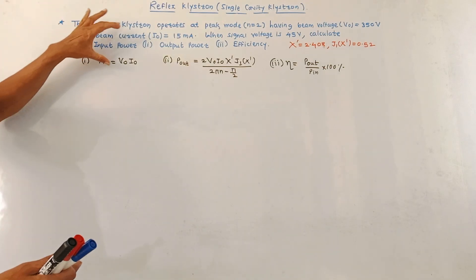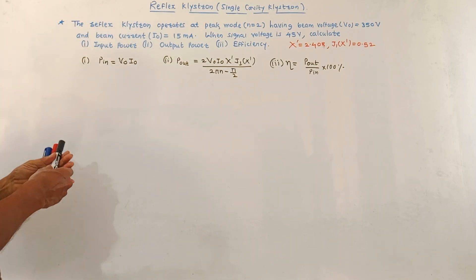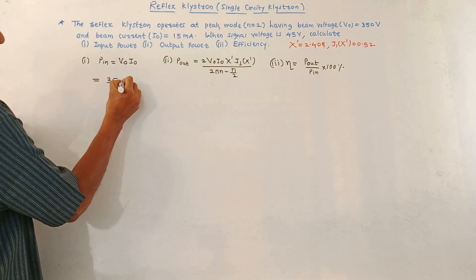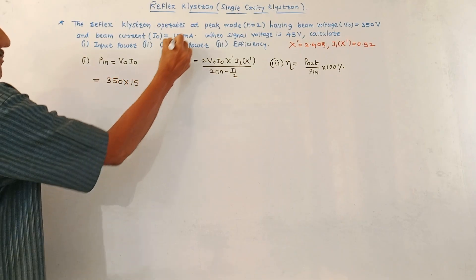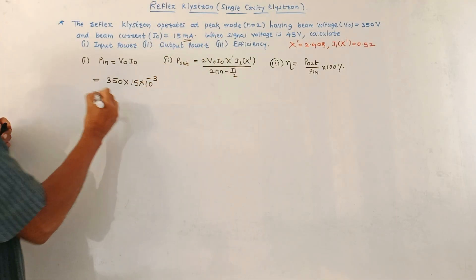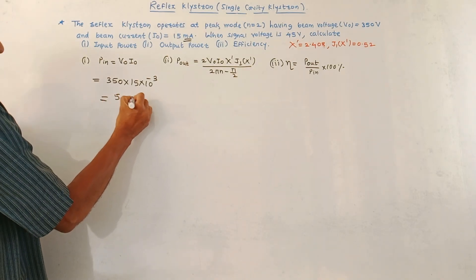Now, the numerical is straightforward. I have already written the formula. Input power is V0 into I0. Simply put the values. V0 is 350 into I0 which is 50 milliampere. Since it is in milliampere, I need to multiply it with 10 raised to minus 3. So input power is 5.35 Watt.